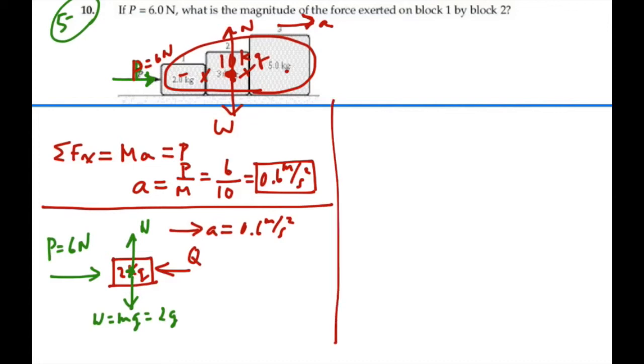So if I look at Newton's second law in the x direction, I would say the summation of all the forces in the x direction is equal to mass 1 times A. And that is equal to the net force in the direction of acceleration. To the right would be positive. So we're going to have P minus Q.